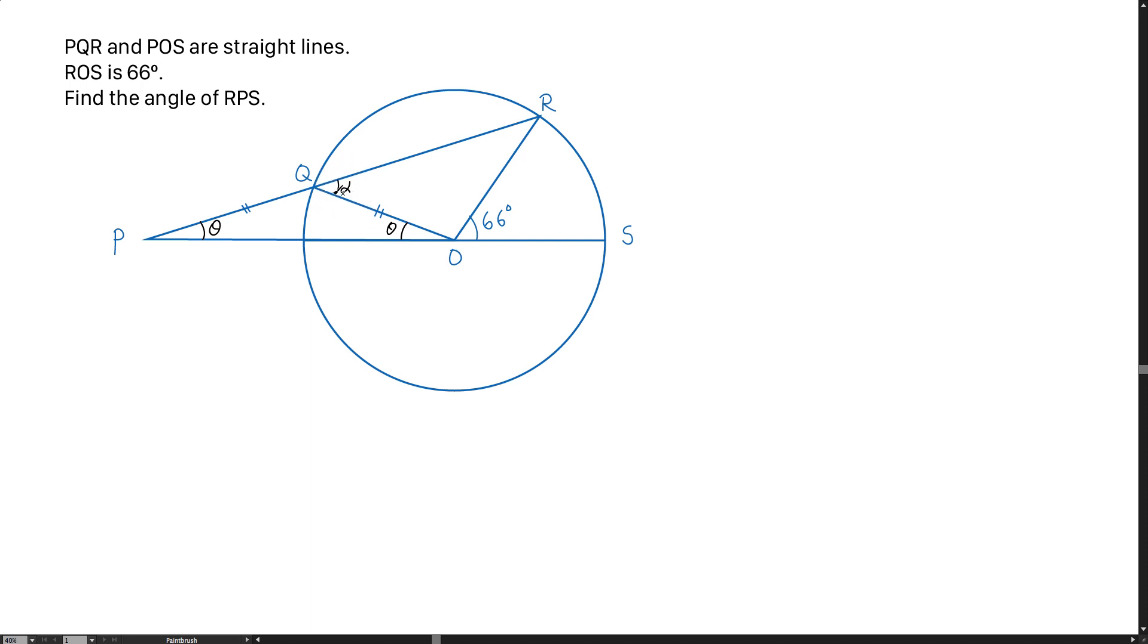So for this triangle, QOR is in fact an isosceles triangle. The reason why is because OQ and OR are the radius of this whole circle. So that's the reason why angle QRO is alpha as well.